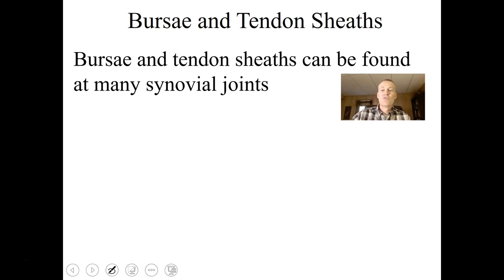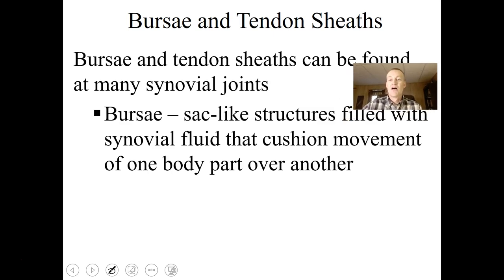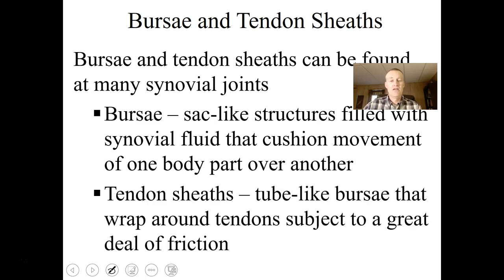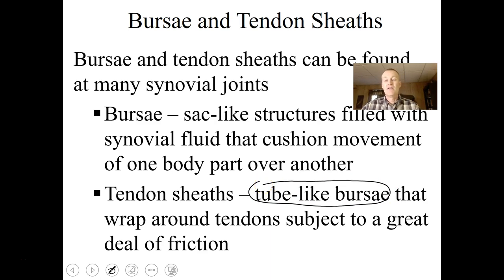In addition to all those parts, there are also bursae and tendon sheaths found at many synovial joints. The bursa — singular — is a sac-like structure filled with synovial fluid that cushions the movement of one body part over another. We see these a lot in the shoulder and knee. Tendon sheaths are tube-like bursae that wrap around tendons and protect them from friction as they're pulled across bones.